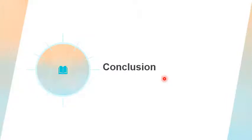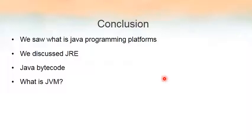To conclude, we discussed Java programming platforms — Standard Edition and Enterprise Edition — as well as bytecode, the Java Virtual Machine, and the Java compiler. We explained why Java is platform independent and why JVM is platform dependent. Bytecode sits between machine code and high-level language. JVM is actually an interpreter — unlike a compiler which converts the entire program at once, an interpreter converts the program line by line into machine code.